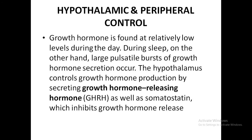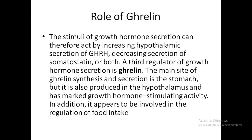Control of secretion: GH is found at relatively low levels during the day, but during sleep there are large pulsatile bursts of GH. The hypothalamus controls GH production via GHRH which stimulates GH release, and somatostatin which inhibits GH release. Growth hormone secretion can be increased by increasing hypothalamic GHRH secretion and by decreasing somatostatin secretion. There is also a third regulator called ghrelin, mainly synthesized and secreted in the stomach but also produced in the hypothalamus, with marked growth hormone stimulating activity.